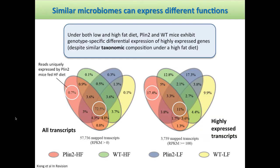So what about function? Under both low-fat and high-fat diets, PLIN2 and wild-type mice exhibit genotype-specific differential expression of highly expressed genes. When we map all of the metatranscriptomic reads, we find we were able to map to around 57,000 transcripts, and about 73% of them are shared across all four sample groups. When we look at these highly expressed transcripts — normalized using RPK, reads per thousand reads mapped — each of the different samples exhibits expression of its own sets of genes. Statistical analyses reveal about 1,300 genes which exhibit differential expression across these different sample types.